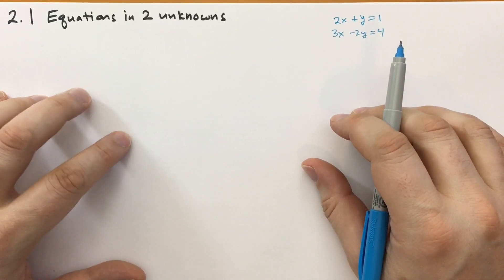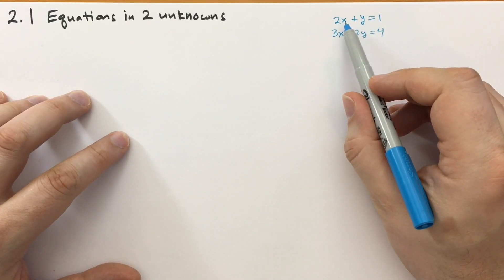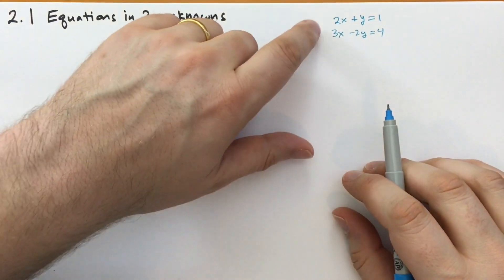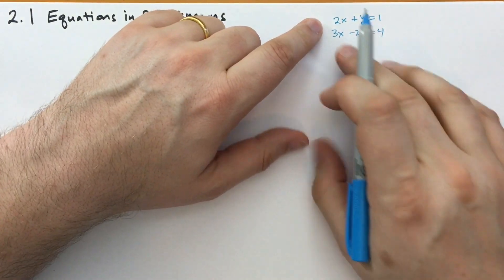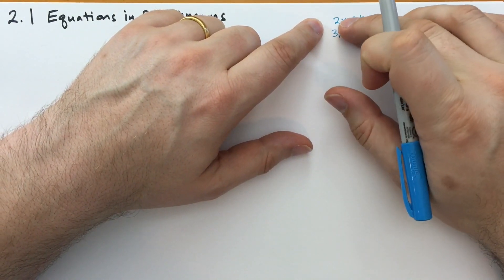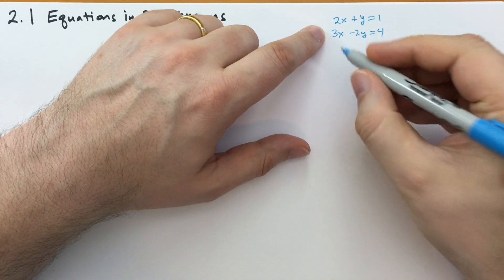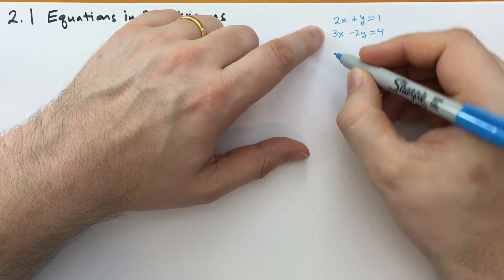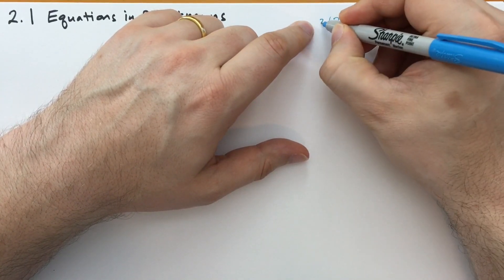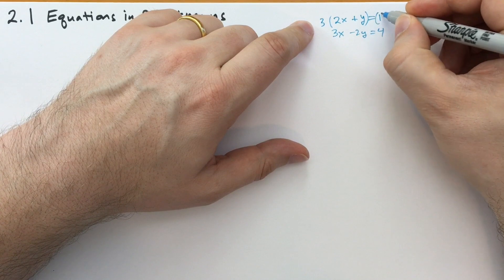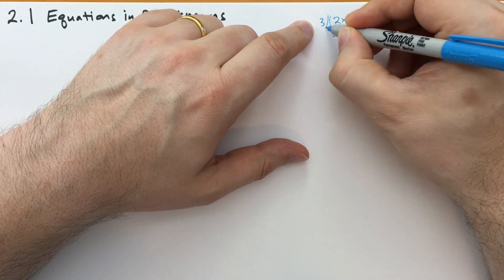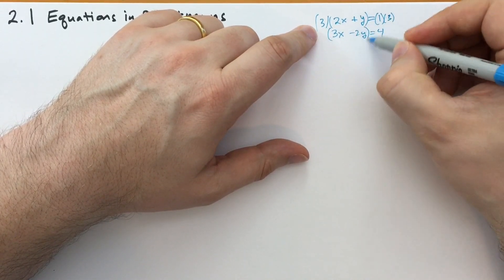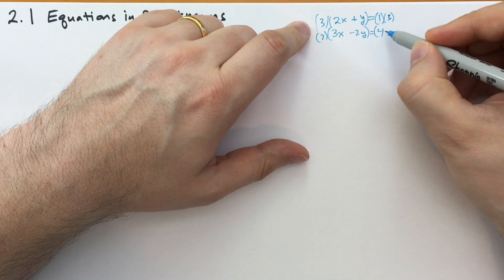The way you do that is you try to get the number of x's at the top and the number of x's on the bottom to be the same. We notice that 2 times 3 is 6 and 3 times 2 is 6. So we're going to multiply the top equation by 3 — multiplying all terms by 3 — and this second equation we're going to multiply by 2.